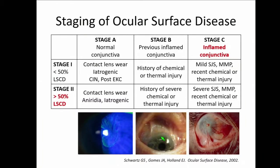In terms of staging, the new staging published most recently is great for helping determine what intervention to offer patients. However, I still find the Holland classification described in 2002 is very good for prognosticating. Patients who have inflamed, active conjunctiva as well as greater than 50% limbal stem cell disease really have the worst prognosis. Unfortunately, they may also be neurotrophic, and therefore any intervention has a poor prognosis.